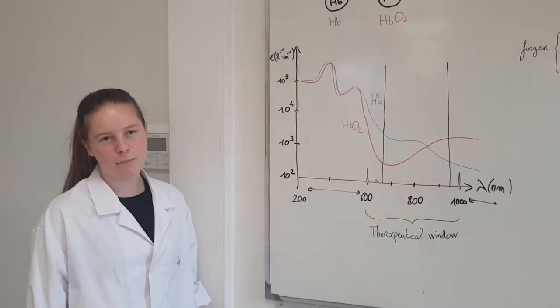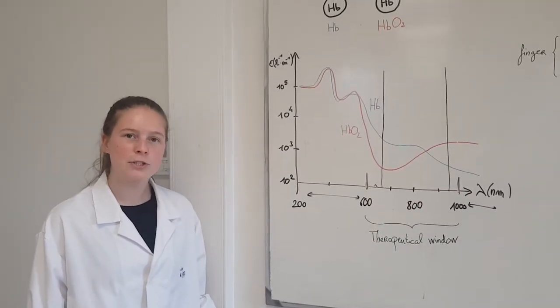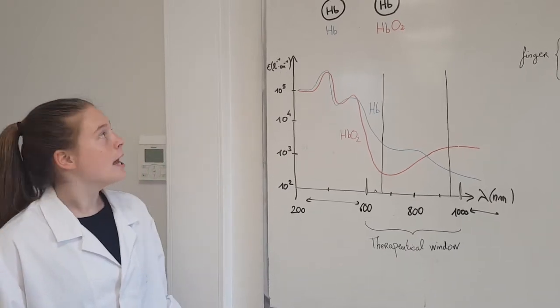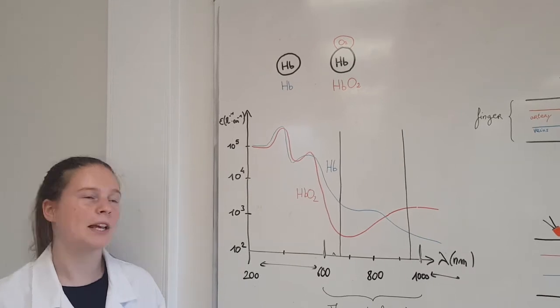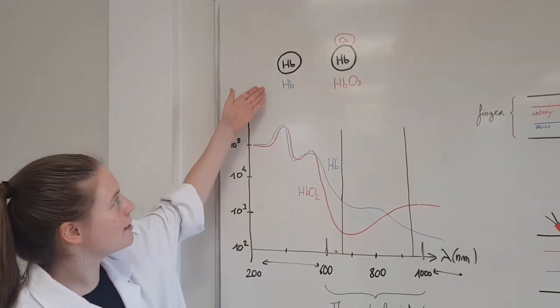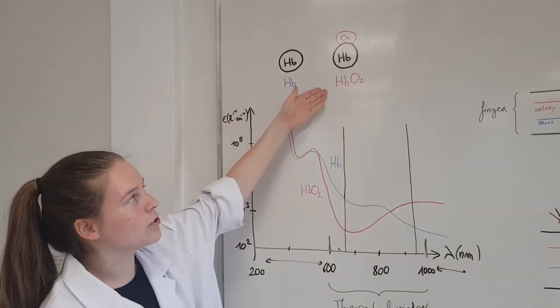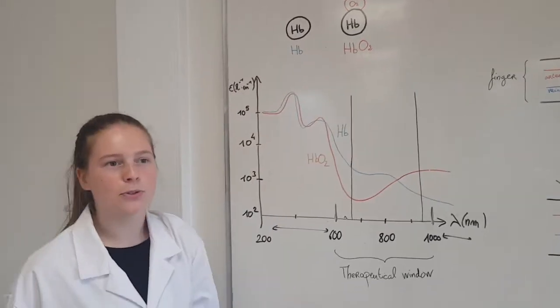To measure the oxygen rate of the patient, we must have a close look at two types of hemoglobins. Hemoglobins are molecules carrying oxygen in the patient's blood. We had a look at deoxygenated hemoglobin (Hb) and oxygenated hemoglobin (HbO2).